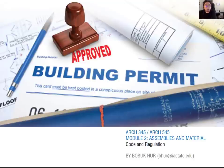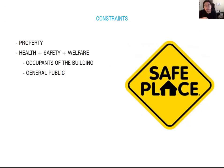We are looking at why we need a building code for your project. The main purpose of building code is to protect the public health, safety, and welfare. Also, it protects your property. So when you design your project, you have to be concerned about health, safety, and welfare. The IBC qualifies all three important parts of your design to meet the minimum requirement for health, safety, and welfare.